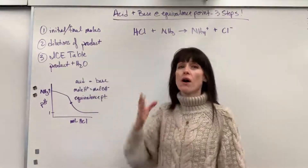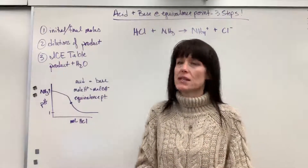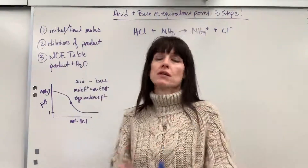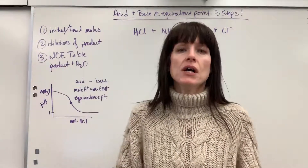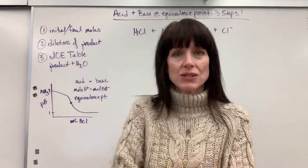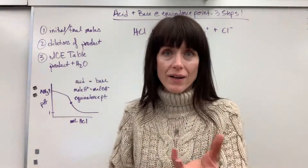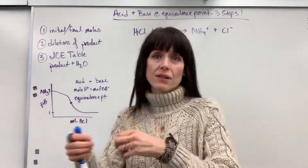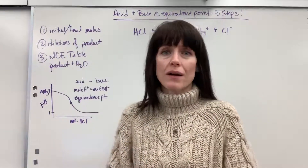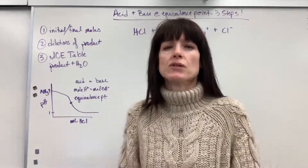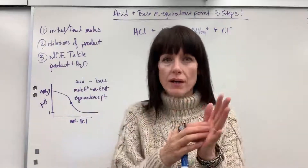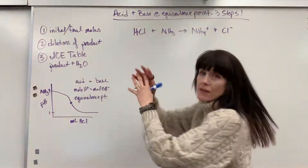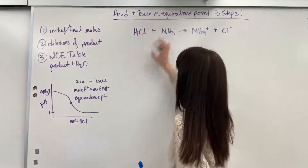First thing you do is always do initial final moles. You know to do this if you're given an acid and a base and one of those is not water. If you are given a solution that says something like acetic acid, what's the pH — that means the acid was added to water, it was created as a solution. In that case, you go right to an ICE table. Or if a salt that has a base ion is added to water, that is just going to be an ICE table. So any time you have one item with water, it's either an acid or a base reaction — go right to the ICE table. So if you are given an acid and base and there's not water, so a strong acid and a weak base, you have to do initial final moles.